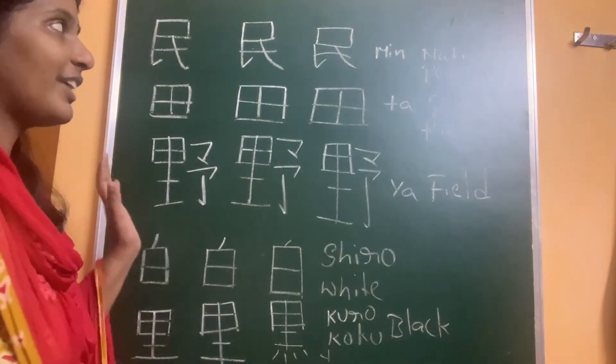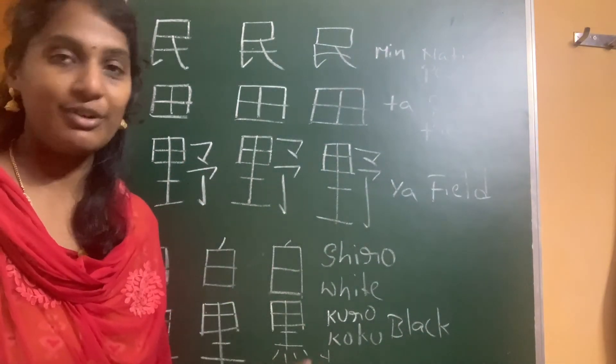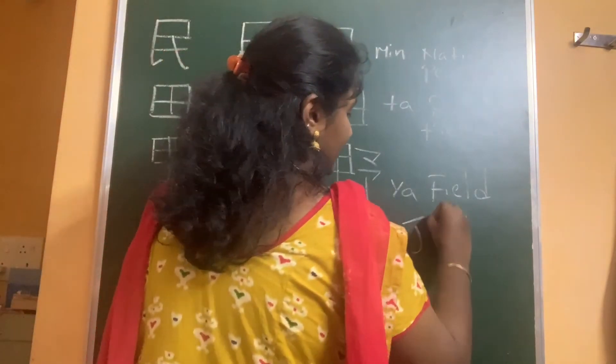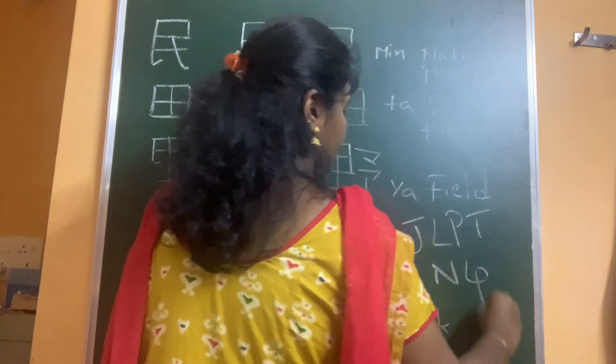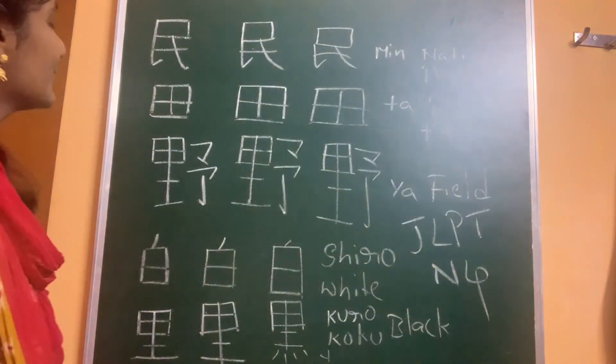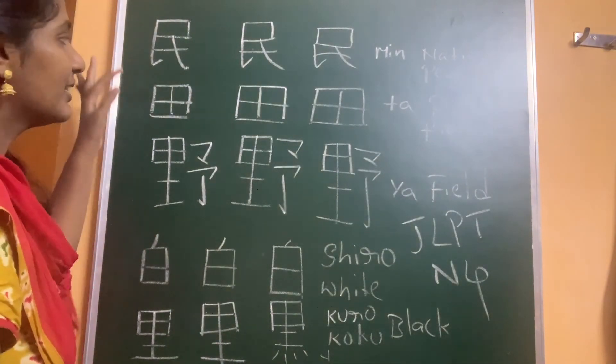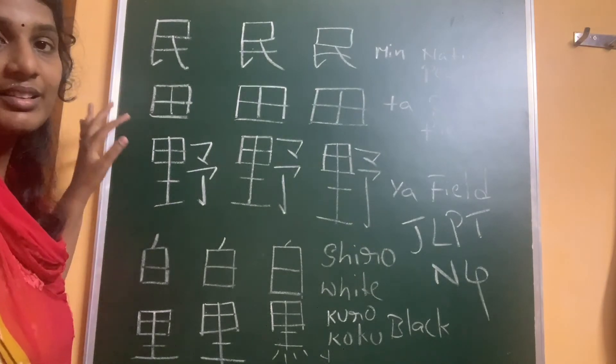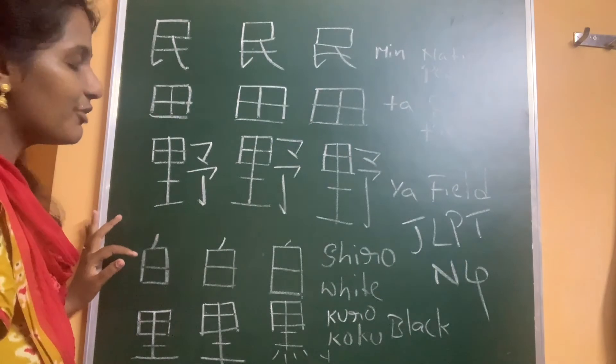These are the five kanjis. If you are preparing for JLPT N4, these are the kanjis for you. We have completed the kanji for nation or people, min, the kanji for rice fields, ta, the kanji for field, ya, and the kanji for white, shiro.